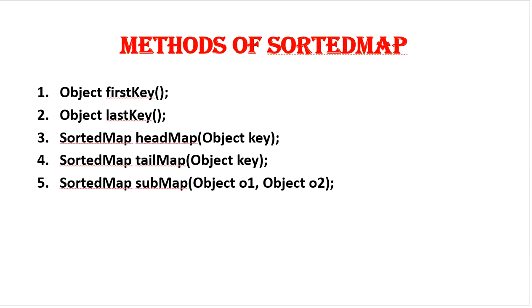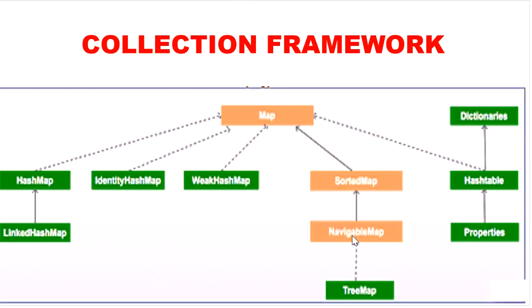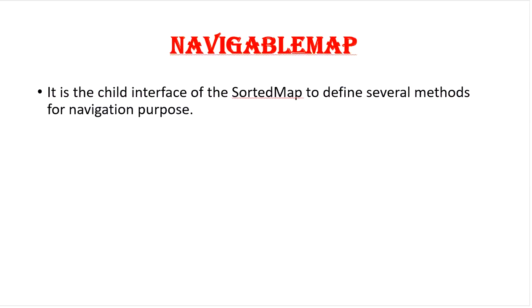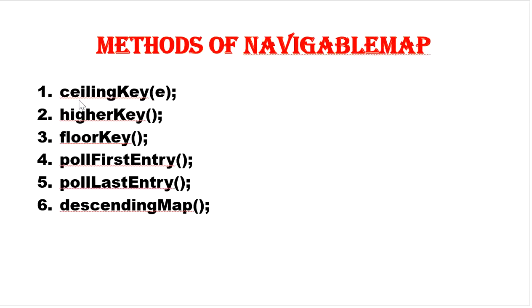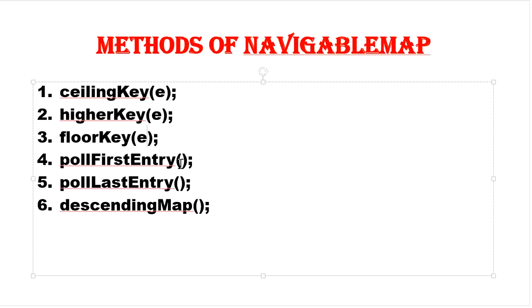The next one is NavigableMap. NavigableMap is the child interface of SortedMap and defines several methods for navigation purpose. The methods include: ceilingKey() which returns the lowest element greater than or equal to the given element, higherKey() which returns the lowest element strictly greater, floorKey() which returns the highest element less than or equal, pollFirstEntry() to remove and return the first entry, pollLastEntry() to remove and return the last entry, and descendingMap() to return the map in reverse order.